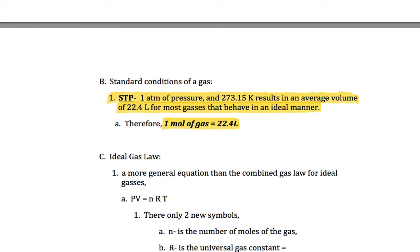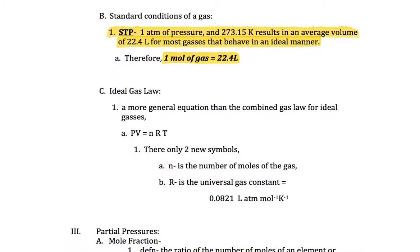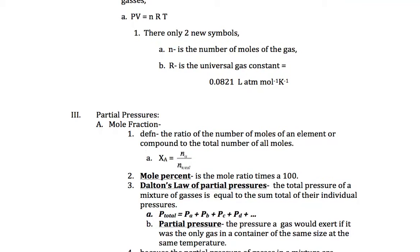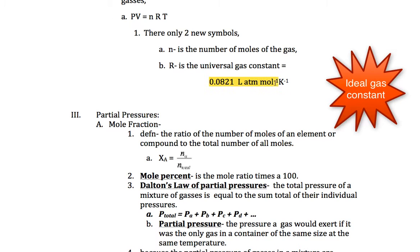Then there's the ideal gas law. So, this is more general law. PV equals NRT, where P is the pressure, V is the volume, N is moles, R is the ideal gas law constant, and T is the temperature in Kelvin.